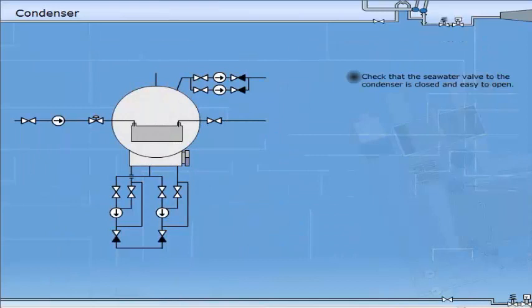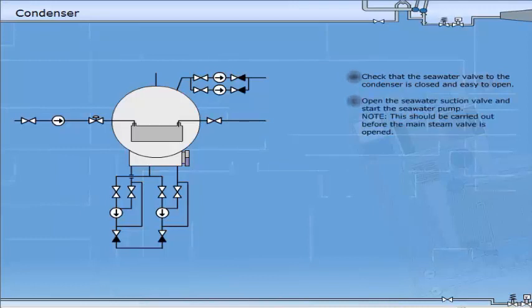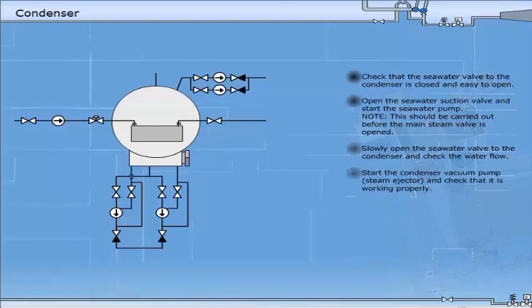Check that the seawater valve to the condenser is closed and easy to open. Open the seawater suction valve and start the seawater pump. Slowly open the seawater valve to the condenser and check the water flow. Start the condenser vacuum pump, steam ejector, and check that it is working properly.